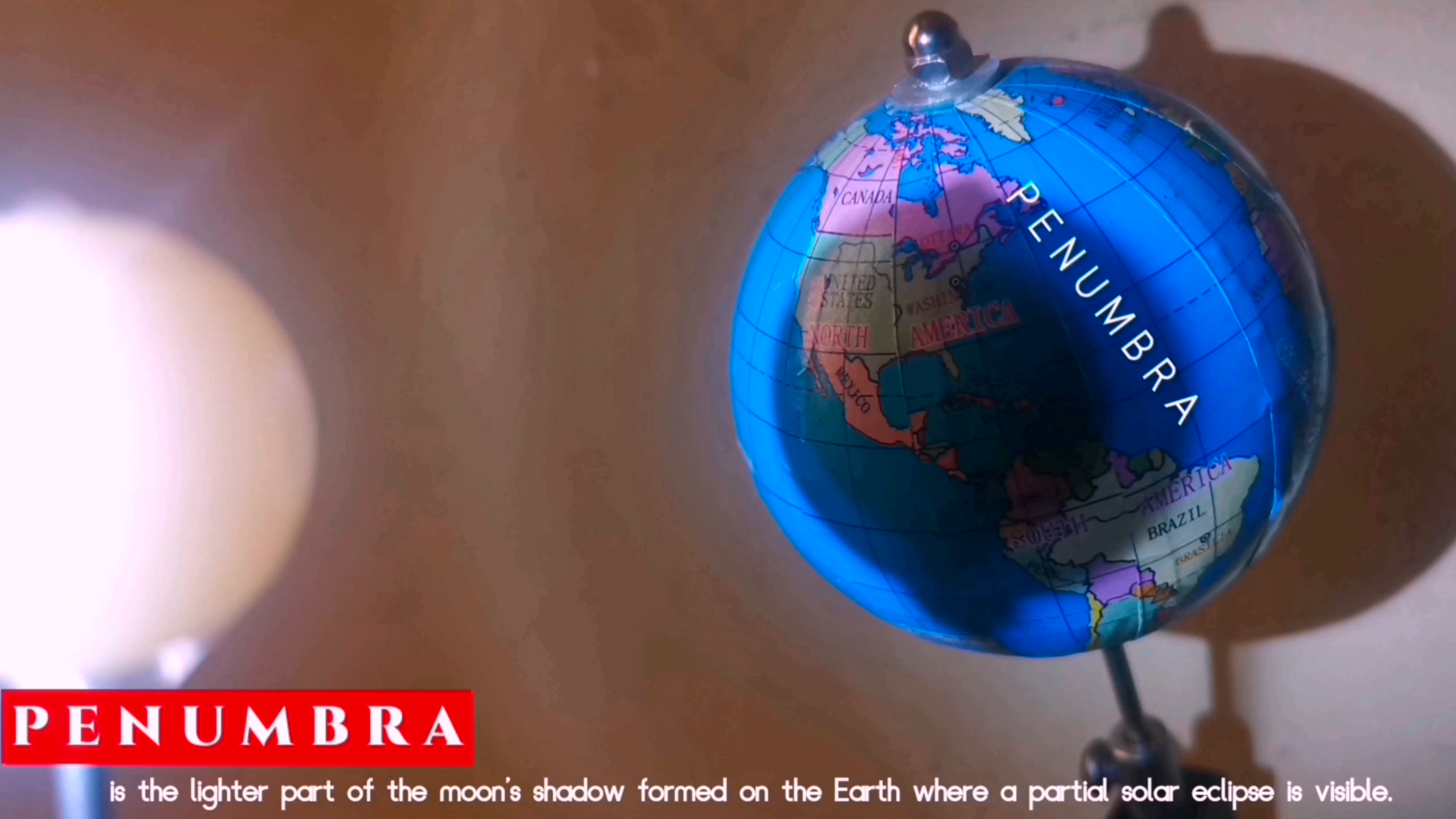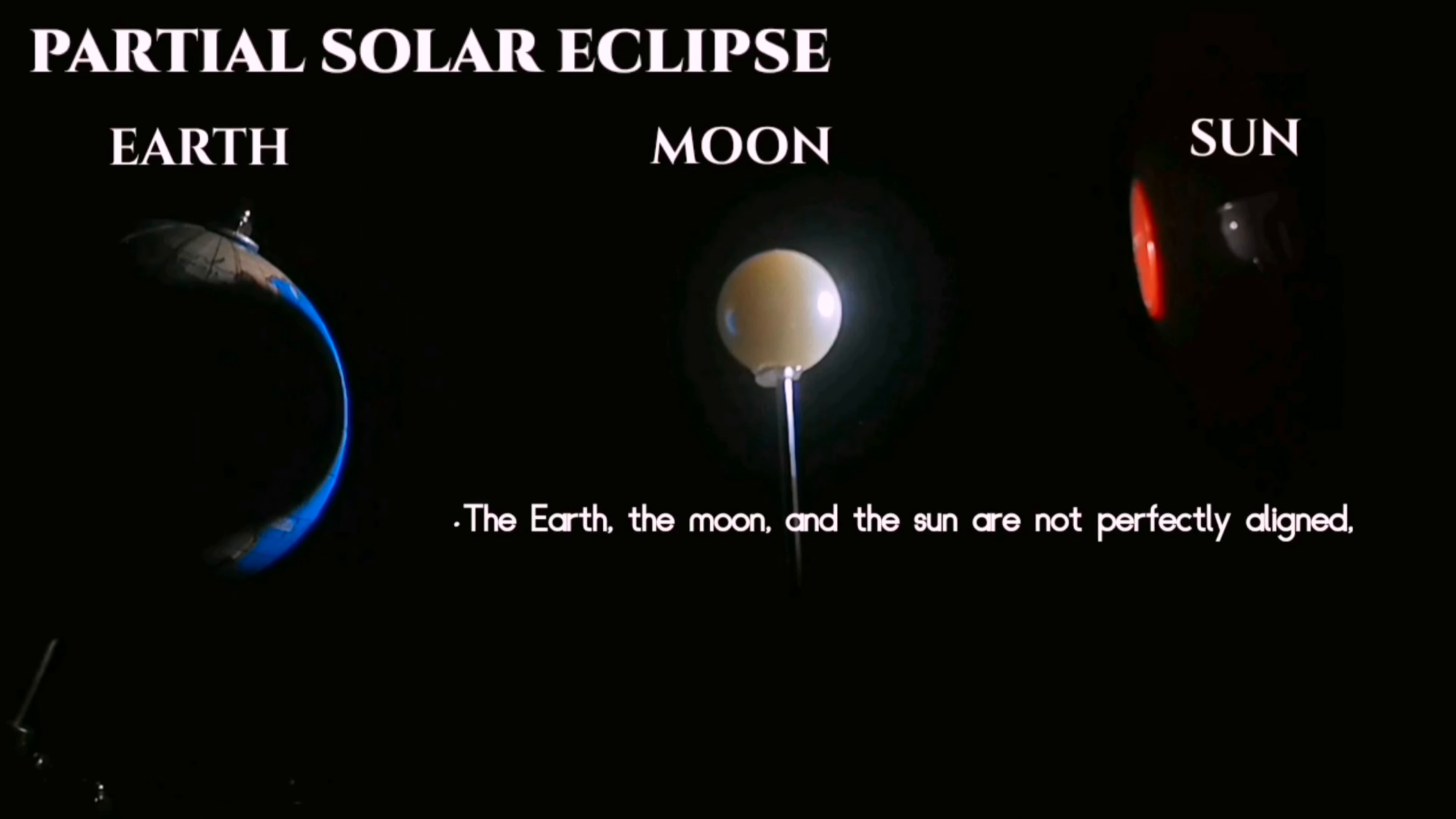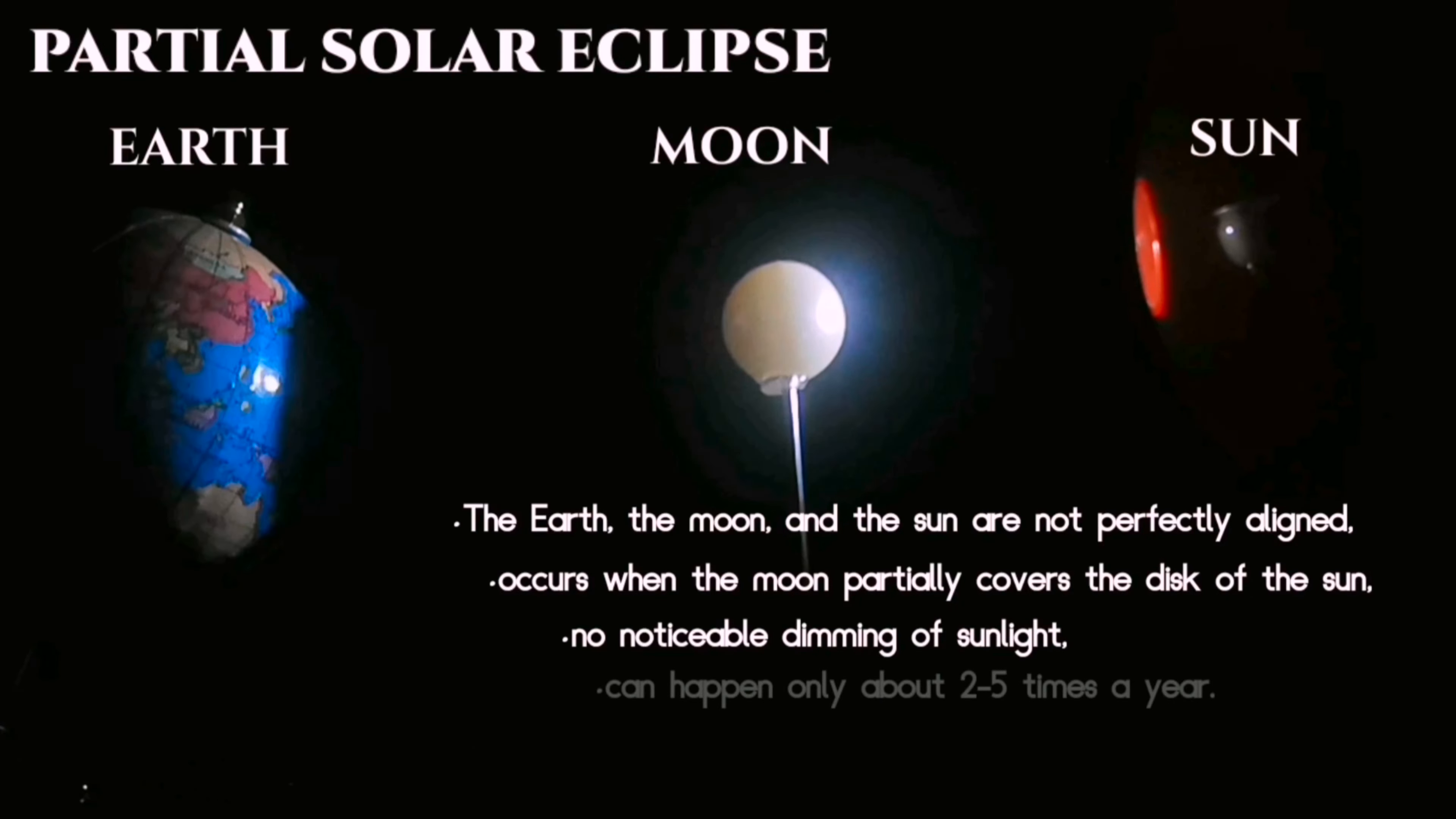While the penumbra is the lighter part of the moon's shadow formed on Earth where a partial solar eclipse is seen. During partial solar eclipse, the Earth, moon, and sun are not perfectly aligned. It occurs when the moon partially covers the disk of the sun and there is no noticeable dimming of sunlight.